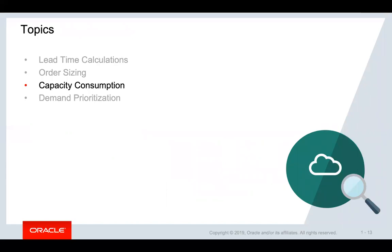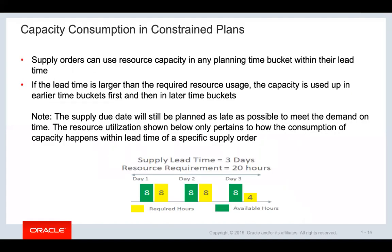This section discusses capacity consumption. Supply orders can use resource capacity in any planning time bucket within their lead time. If the lead time is larger than the required resource usage, the capacity is used up in earlier time buckets first and then in later time buckets. In this example, the supply lead time is 3 days and the resource requirement is 20 hours — resource capacity is used up in the earlier time bucket first. The supply due date will still be planned as late as possible to meet the demand on time. The resource utilization shown pertains to how the consumption of capacity happens within the lead time of a specific supply order.